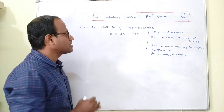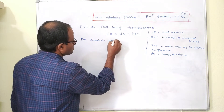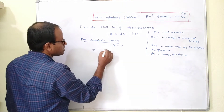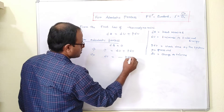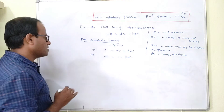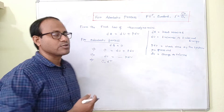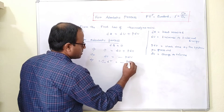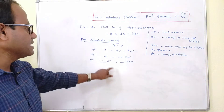For the adiabatic process, dQ is equal to zero. This implies zero equals dU plus P dV, which implies dU equals minus P dV. Now, dU is nothing but Cv dT, or for n moles of gas, n Cv dT equals minus P dV. So our relation involves P, V, and T.